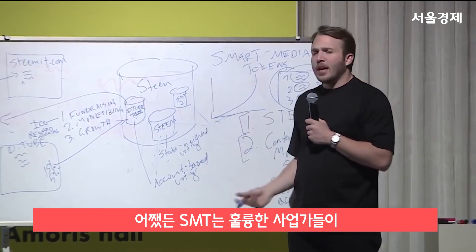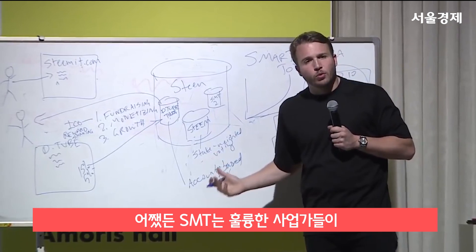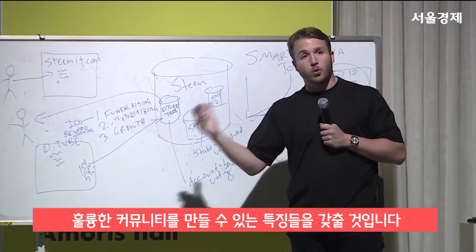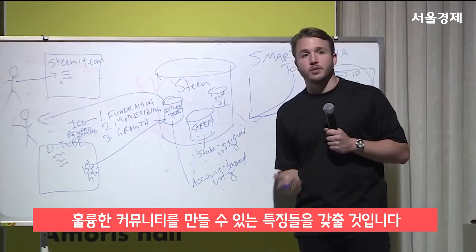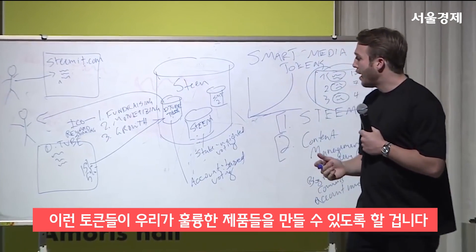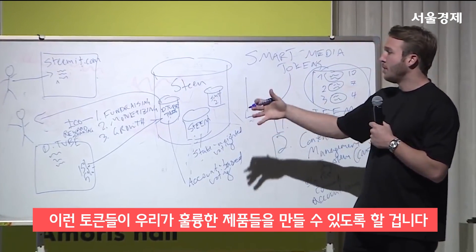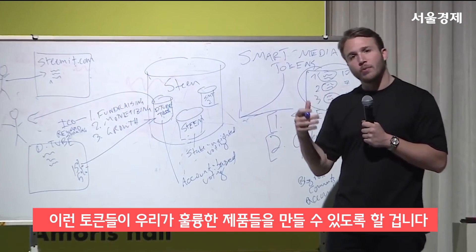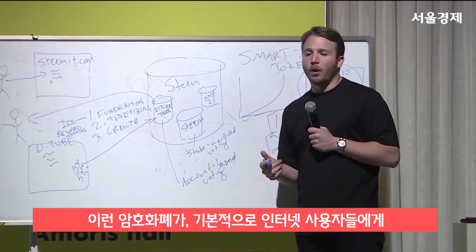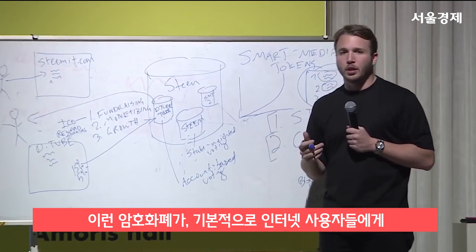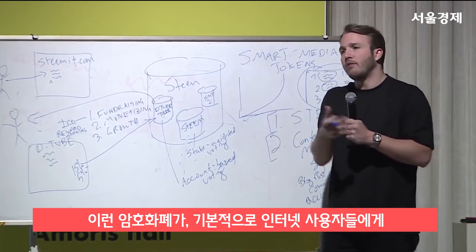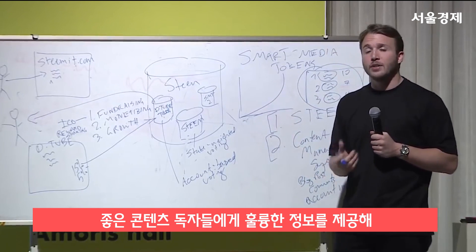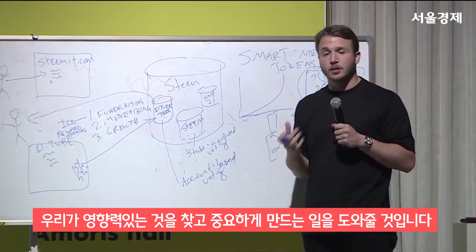So SMTs are going to have all these cool features that allow and empower entrepreneurs to start great niche communities of any sort. And also, they'll empower these tokens to really help us make great products, where cryptocurrency is giving users of the internet and readers of content great information — helping us be effective in finding things that matter to us.